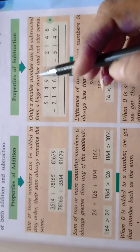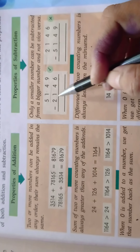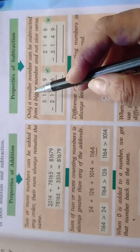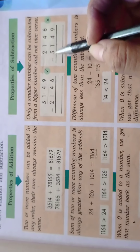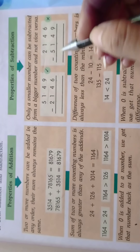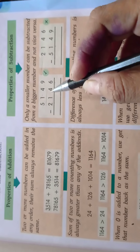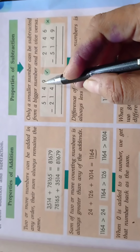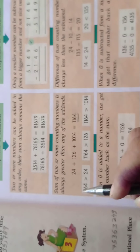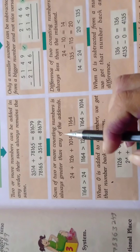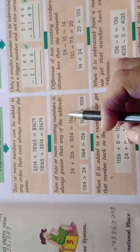लेकिन subtraction में ऐसा नहीं होगा। Only the smaller number can be subtracted from the bigger number. Smaller number को हमेशा नीचे लिखना होगा और bigger number को ऊपर लिखना होगा। अगर बड़ा number नीचे और smaller ऊपर लिख कर minus किया तो यह wrong हो जाएगा — bigger number ऊपर और smaller number नीचे।